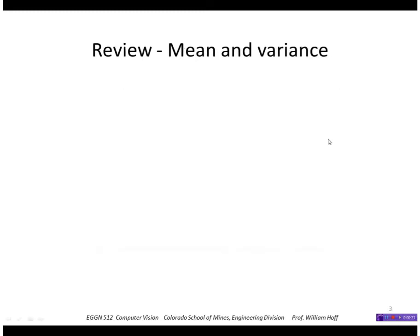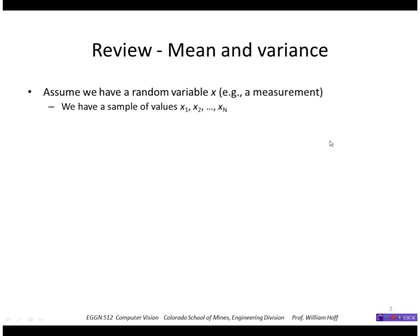First I'm going to review some statistics on mean and variance. We have a random variable x, in that case it might be a measurement, and we have a sample of values x1 through xn. We can estimate its mean or expected value by the usual formula for average. You sum up all the values and divide by n.